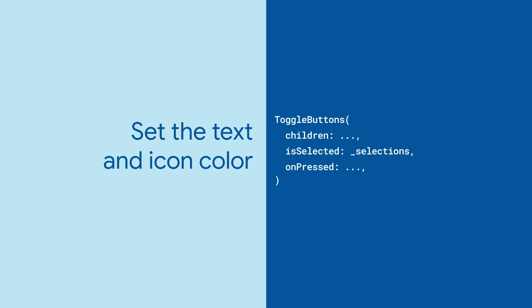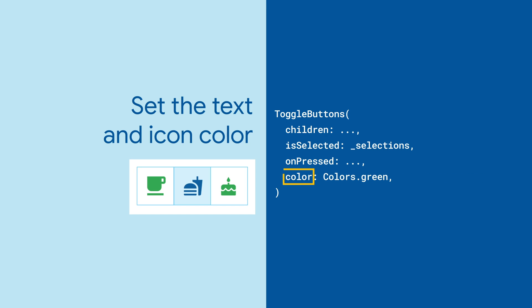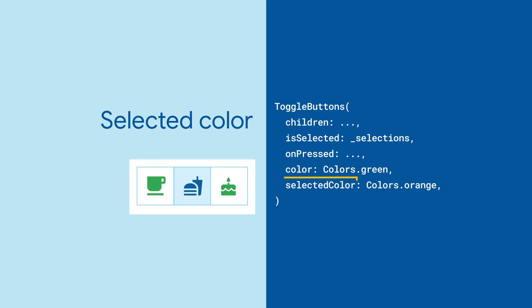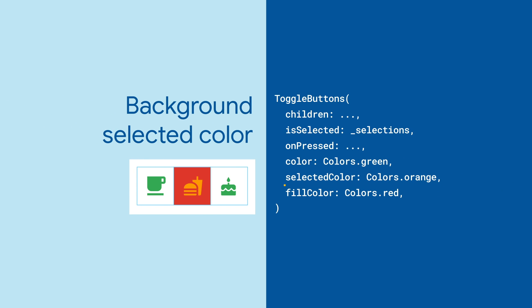There are a lot of other parameters that let you customize the look of your buttons if you don't want them to inherit your app defaults. You can set the text and icon color for when the button is unselected, when the button is selected, and the background of the selected buttons.